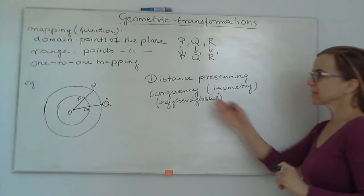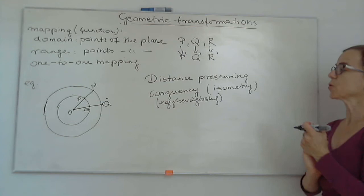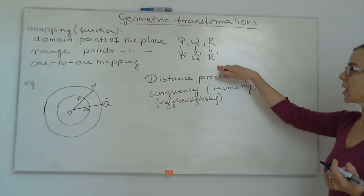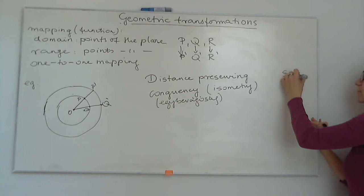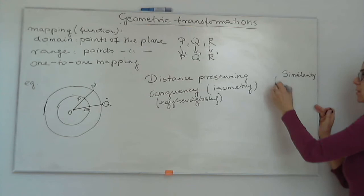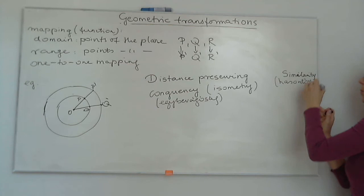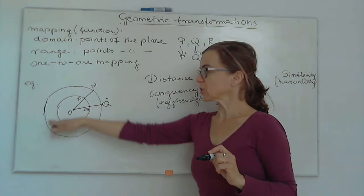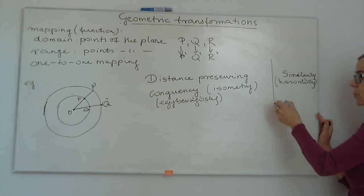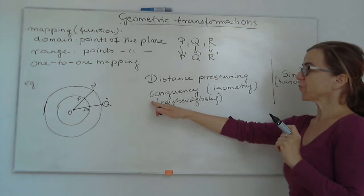It follows that when two figures are mapped from one to the other by a congruent transformation, we say they are congruent. In class 10 you will learn about similarity, which is not a distance-preserving transformation. The concentric circles example — mapping the smaller circle into the larger one — is an example of similarity. It is also a geometric transformation and a one-to-one mapping, but it is not distance-preserving, so we will not deal with it this year.